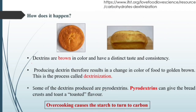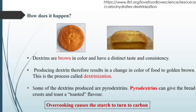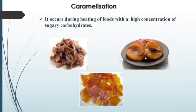Dextrins — polymers of alpha-D-glucose — produce a browning color with unique taste and consistency. When heat is applied, starch converts into dextrin, resulting in the food changing to a golden brown color — this process is known as dextrinization. Some dextrins produce pyrodextrins, which give bread crust and toast a toasted flavor. Overcooking causes the starch to turn to carbon. Examples include toasting bread and the brown crust color required in bakery products.